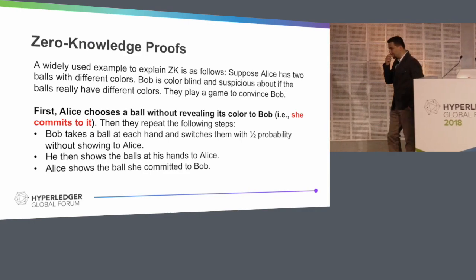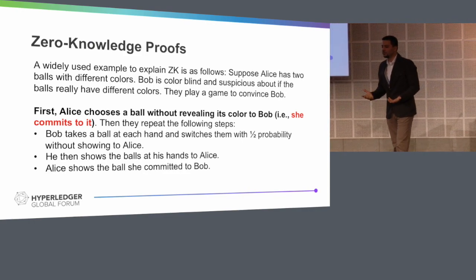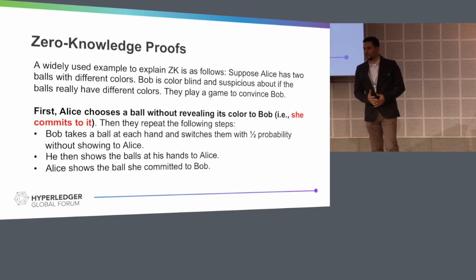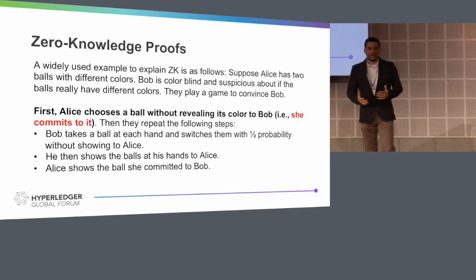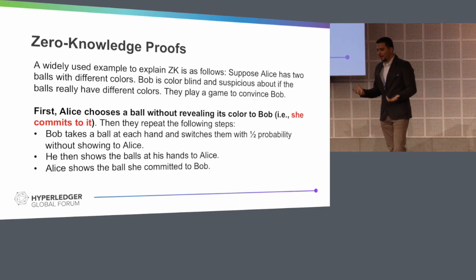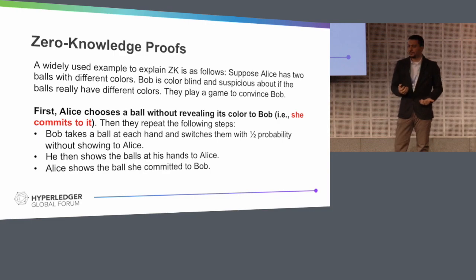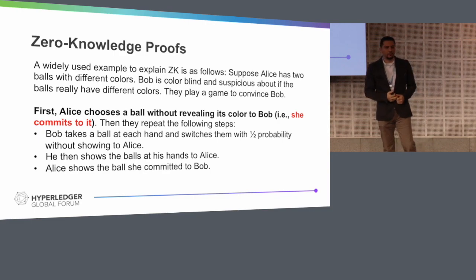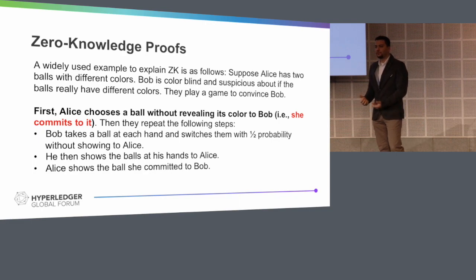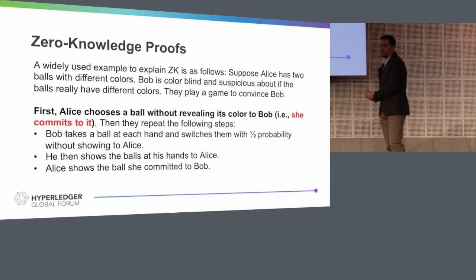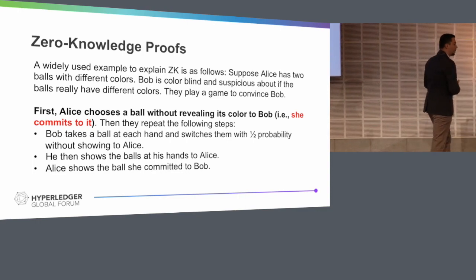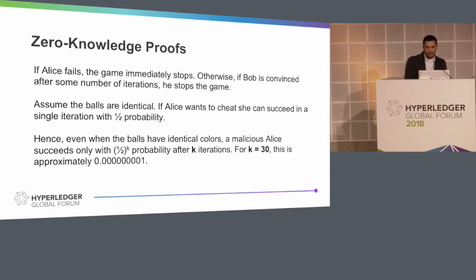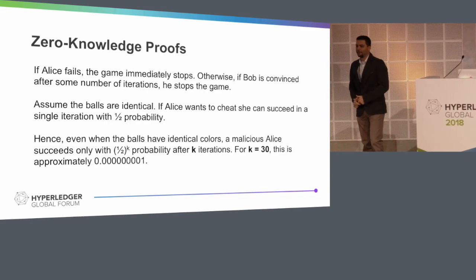Here is a widely used example to explain Zero Knowledge Proofs. Suppose Alice has two balls with different colors, and Bob is colorblind and suspicious about whether the balls really have different colors. So they play a game to convince Bob. First, Alice chooses a ball without revealing its color to Bob — we say she commits to that ball. Then Bob takes the balls and, without showing them to Alice, switches them with one-over-two probability. He presents them back to Alice, and Alice picks the ball she committed to before. If Alice fails, the game immediately stops.